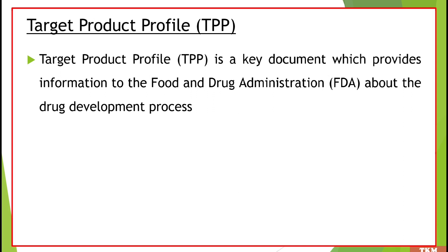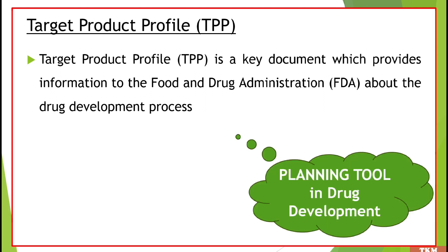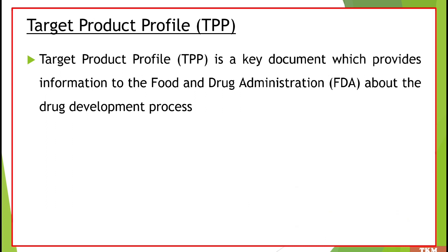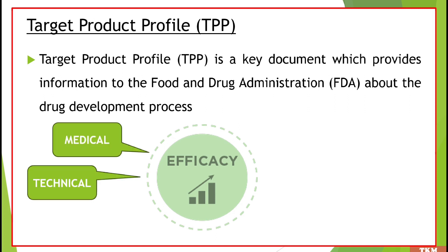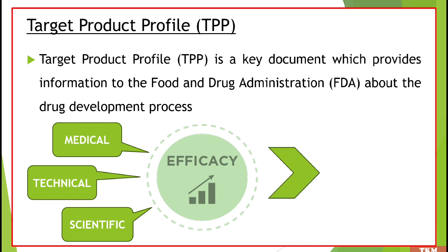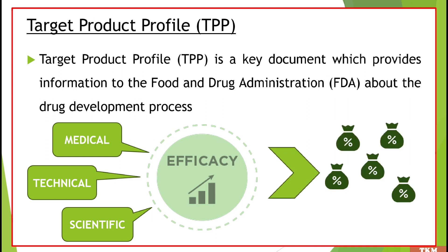This entire QBD process is about documentation. Thus, this TPP is a planning tool in drug development. The purpose of TPP is to ensure that the drug development process of the manufacturer is efficient and provides all the required relevant medical, technical, and scientific information for evaluating the commercial outcome of a drug.